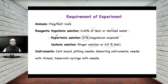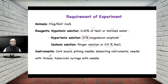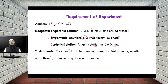The instruments needed include a cock board, pithing needles, dissecting instruments, needle with thread especially to put the knot, and a tuberculin syringe with needle to inject hypertonic, hypotonic, and isotonic solution into the different compartments of intestine that you are going to make. This is the requirement of the experiment.